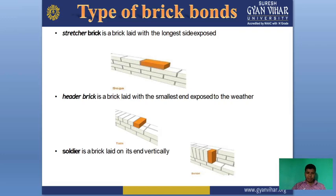As you can see in the diagram, this is a stretcher brick. Next is the header brick. A header brick is a brick laid with the smallest end exposed to the weather. In a header brick, wherever we lay it or place it, the smallest end is exposed. The third one is soldier brick — a brick that is laid in the vertical direction.